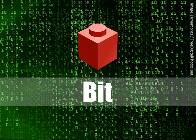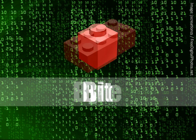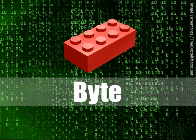A single piece of code, like a zero or a one, is called a bit. A combination of 8 bits is called a byte.